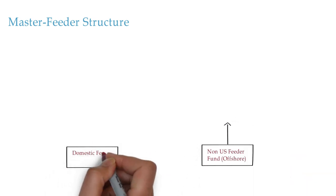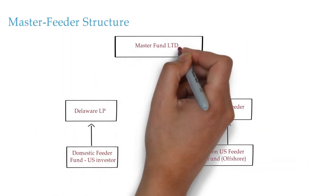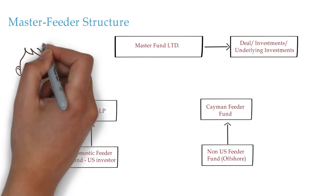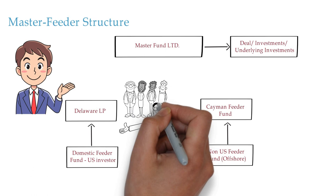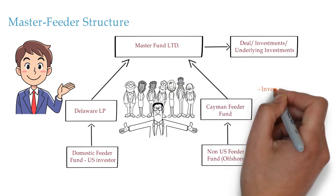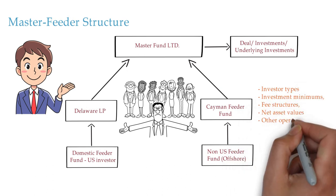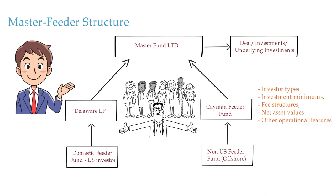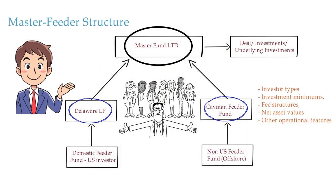Now let's discuss some complex private equity structures. One of the common complex structures is the master-feeder structure. A typical master-feeder structure includes one master fund with a US feeder and one non-US feeder. The benefit of this structure is that it does not restrict the investee fund to just one type of investor. Feeder funds that invest in the same master fund can differ from one another in their investor types, investment minimums, fee structures, net asset values, and other operational features.